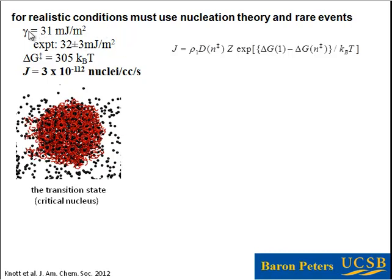Now we know everything in our classical nucleation theory rate expression: the interfacial free energy, the driving force, and the shape factor — the nuclei are confirmed to be spherical. We can now plug them into the prefactor and barrier expressions. We estimate the barrier is 305 kT. Using classical nucleation theory, we estimate the rate constant to be 3 × 10^-112 nuclei per cubic centimeter per second. Here is a picture of the nucleus at our estimated critical size of 350 cages, confirming the spherical shape.